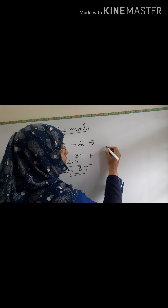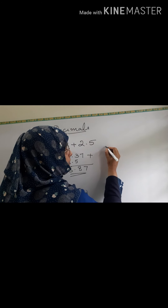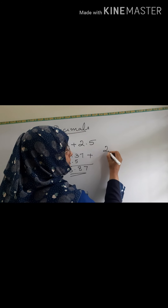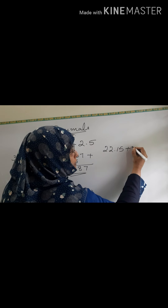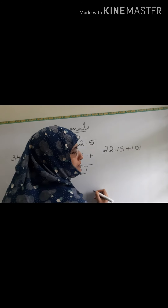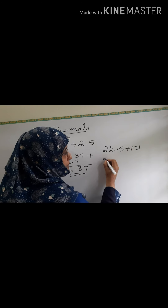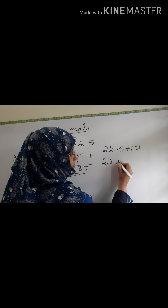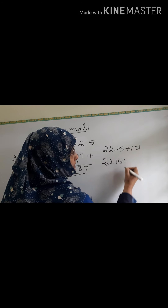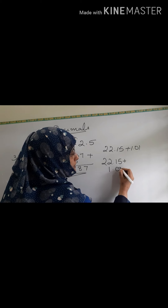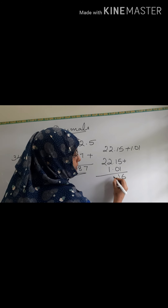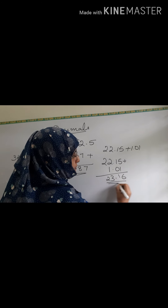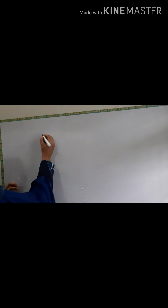You want one more example? Take 22.15 plus 1.01. First write 22.15 plus 1.01, then you add it. The answer is 23.16.